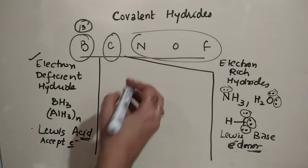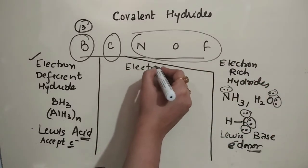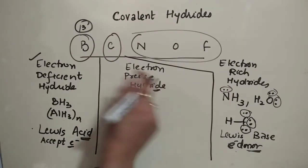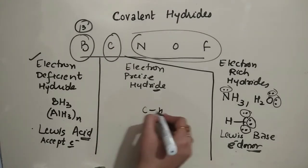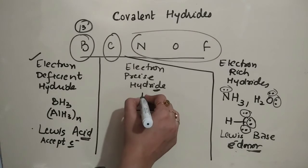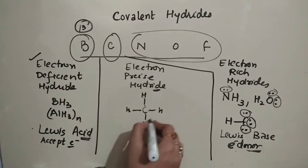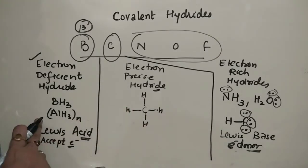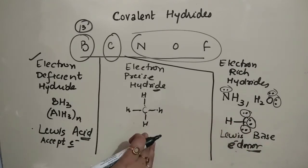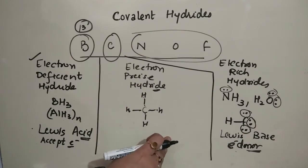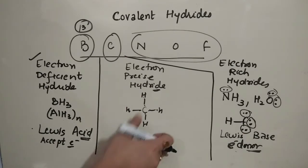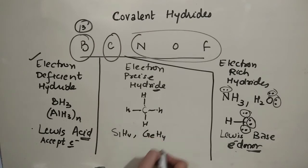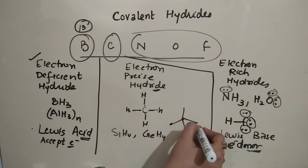Electron-precise hydrides have exactly the precise number of electrons completing the octet — for example Group 14 elements: CH4. In CH4, carbon has 4 electrons and 4 hydrogens provide 4 more, perfectly completing the octet. There is no deficiency and no excess of electrons. Electron-precise hydrides are generally formed by Group 14 elements — examples: CH4, SiH4, GeH4 — and they have tetrahedral geometry.